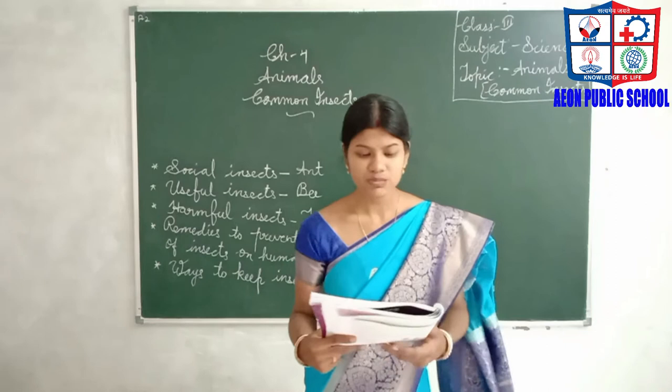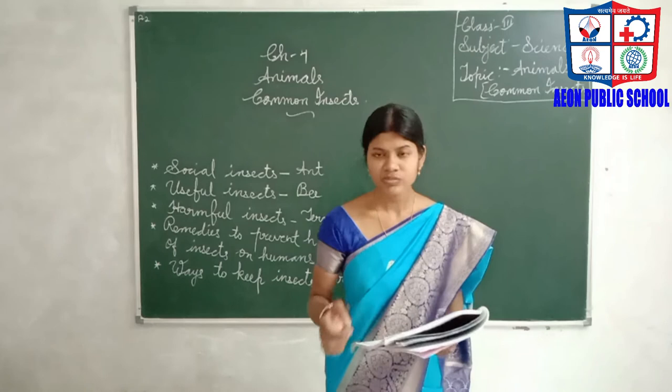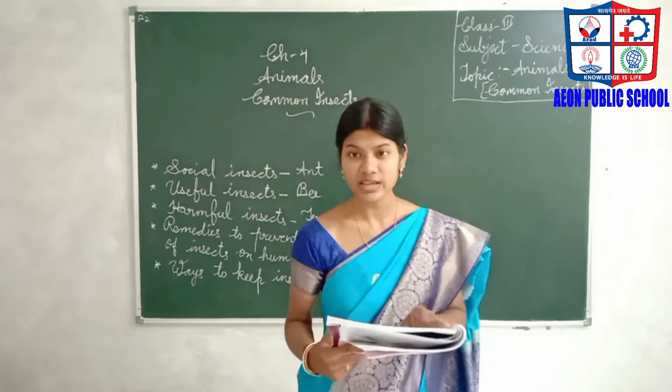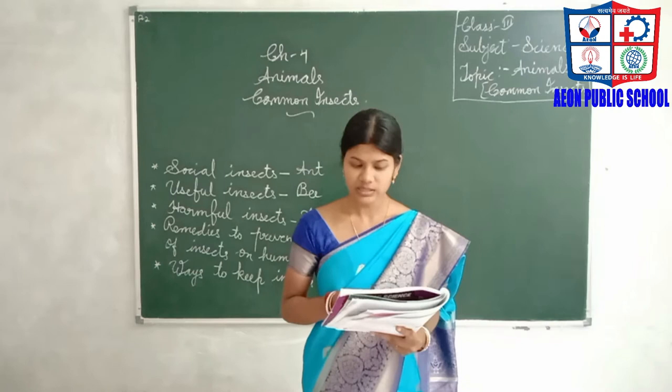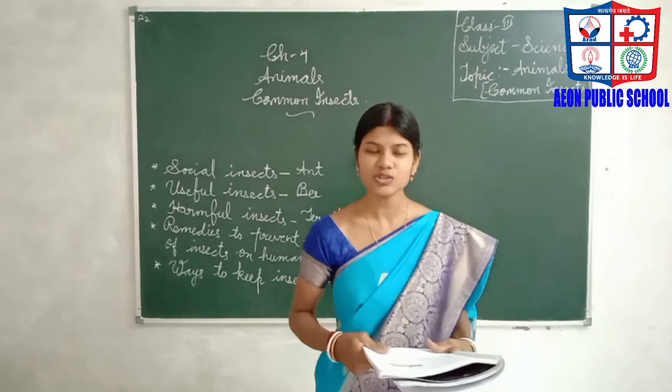So ants, bees, wasps and termites — wasps are similar to bees. One sting from a wasp is not very harmful, but if 30 to 40 stings occur it will harm us. And termites are the insects that depend upon and eat wood. They live in large, well-organized colonies.